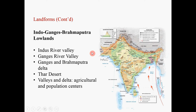The Indo-Ganges-Brahmaputra Lowlands. This big lowland is formed by several major rivers: the Indus River, the Ganges River, and the Brahmaputra River. We can divide the entire lowland area into several components: the Indus River Valley as one component, the Ganges Valley, and then you have this delta region.